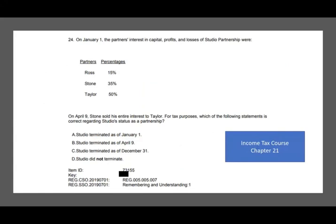On January 1st, the partner's interest in capital, profit, and losses of Studio Partnership is as follows: Ross 15%, Stone 35%, and Taylor 50%. On April 9th, Stone sold his entire interest to Taylor. For tax purposes, which of the following statements is correct regarding the status as a partnership?